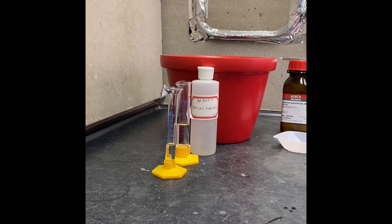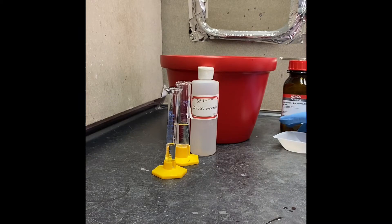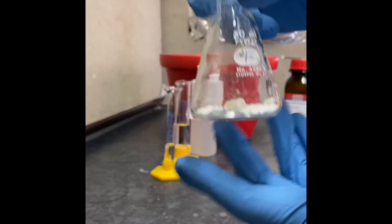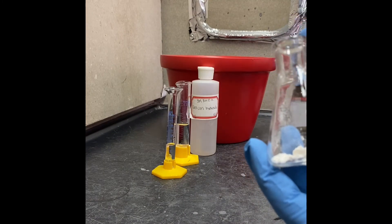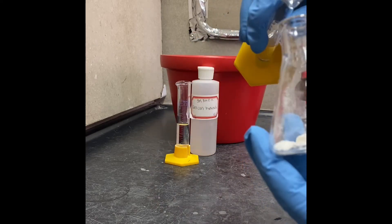I'm going to use this 50 milliliter flask and I'm going to transfer the solid to here. Transfer the thiamine hydrochloride solid here, and we're going to dissolve that in 4 milliliters of water.